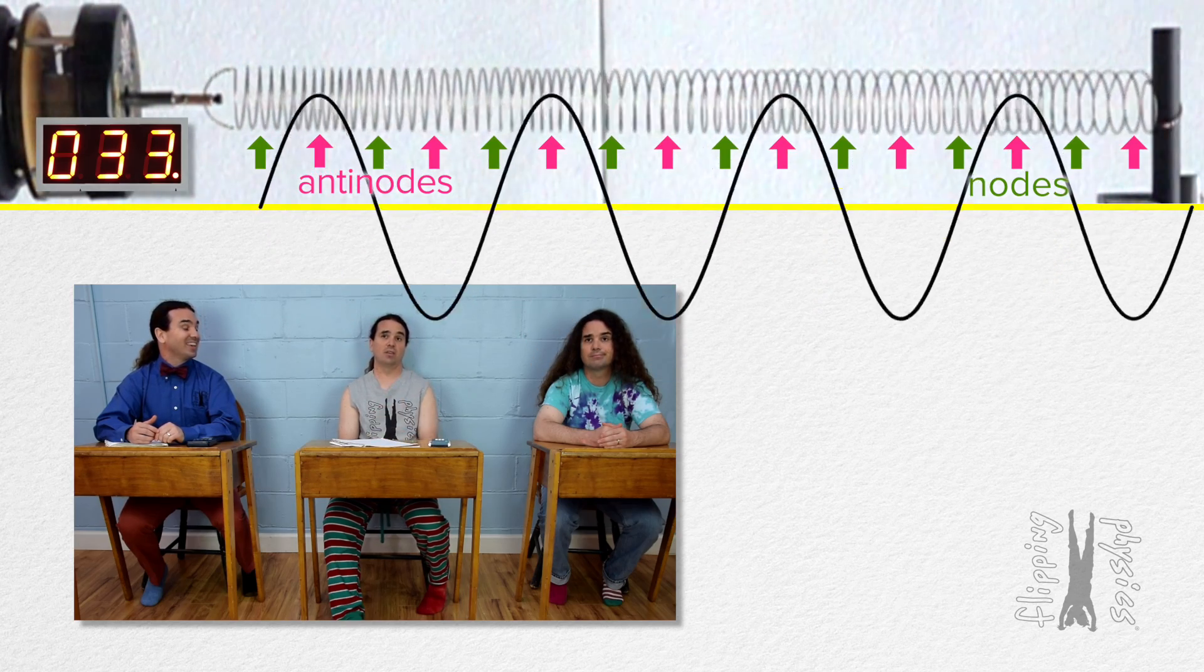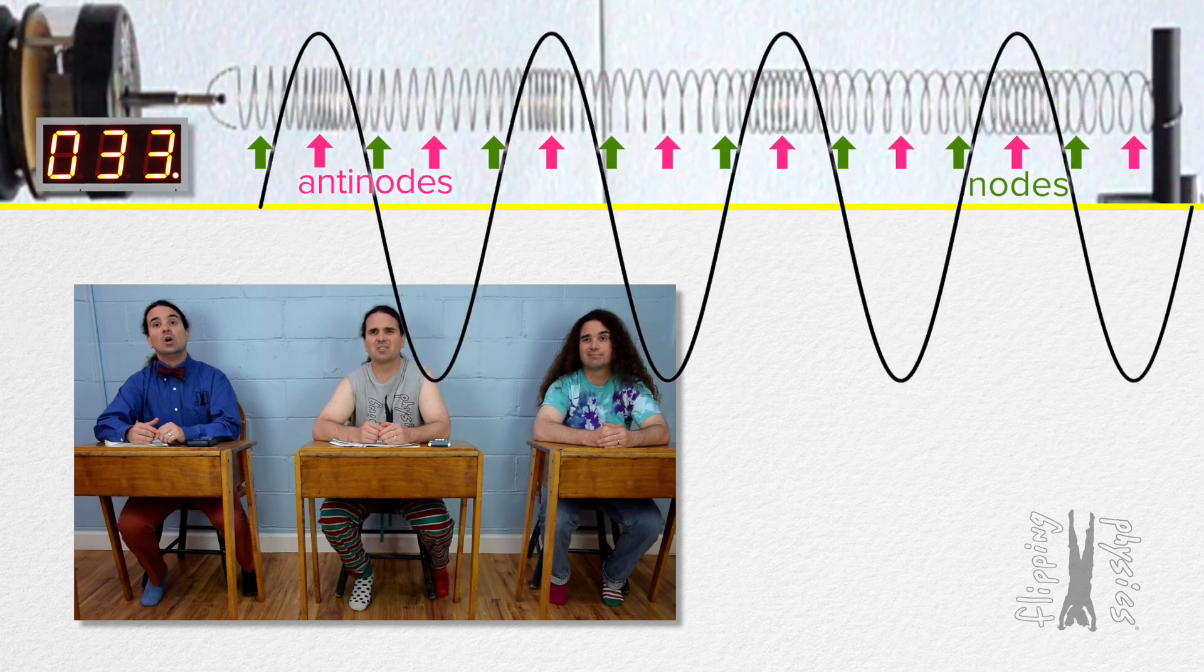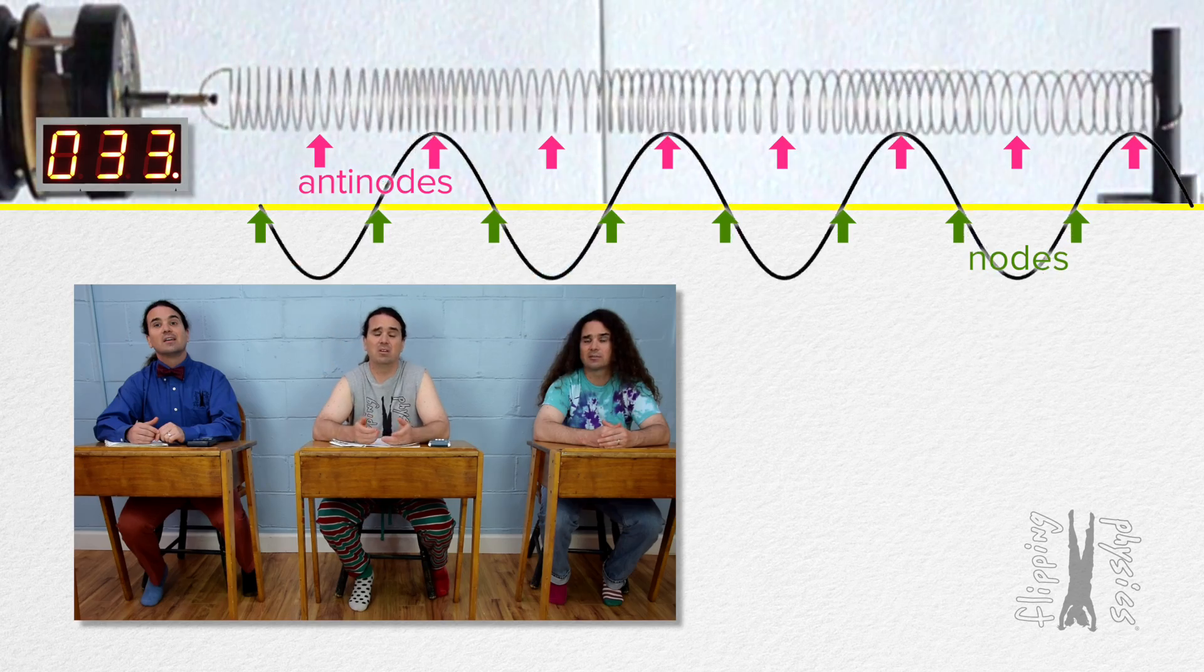Sure, nodes are where there is constant density, but the nodes are more difficult to see than the antinodes. The animation does help to show where the nodes are. That's true.